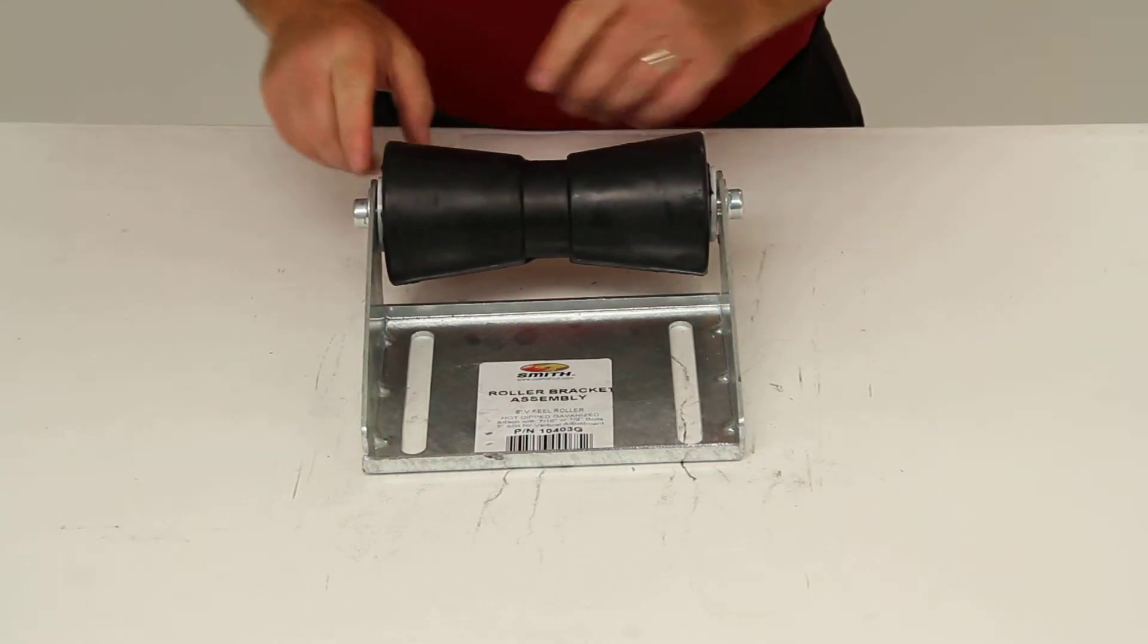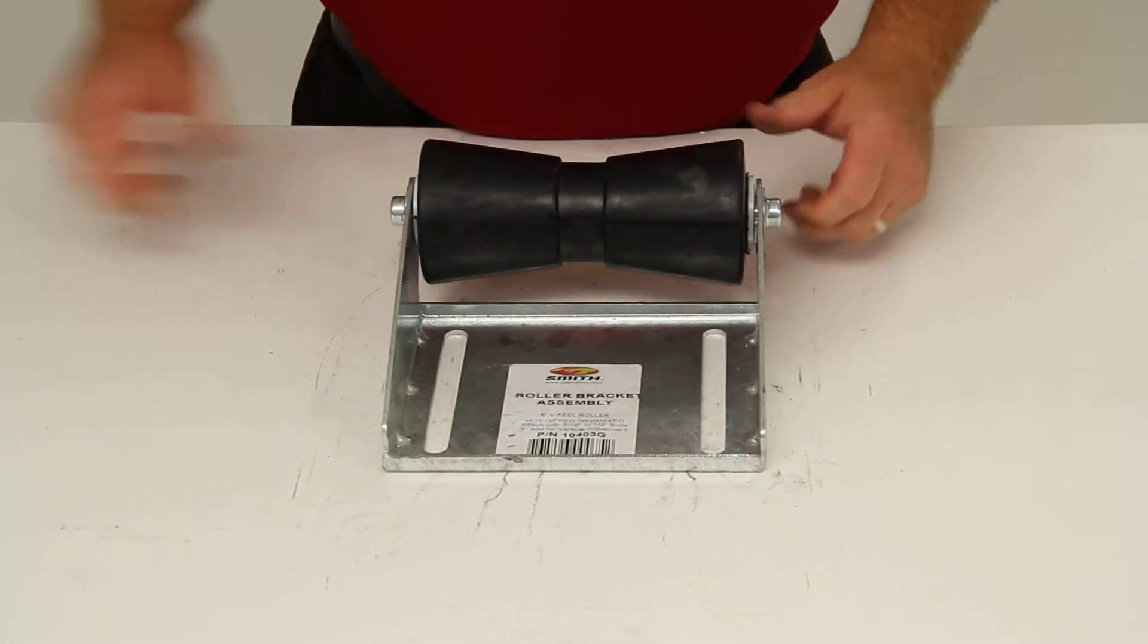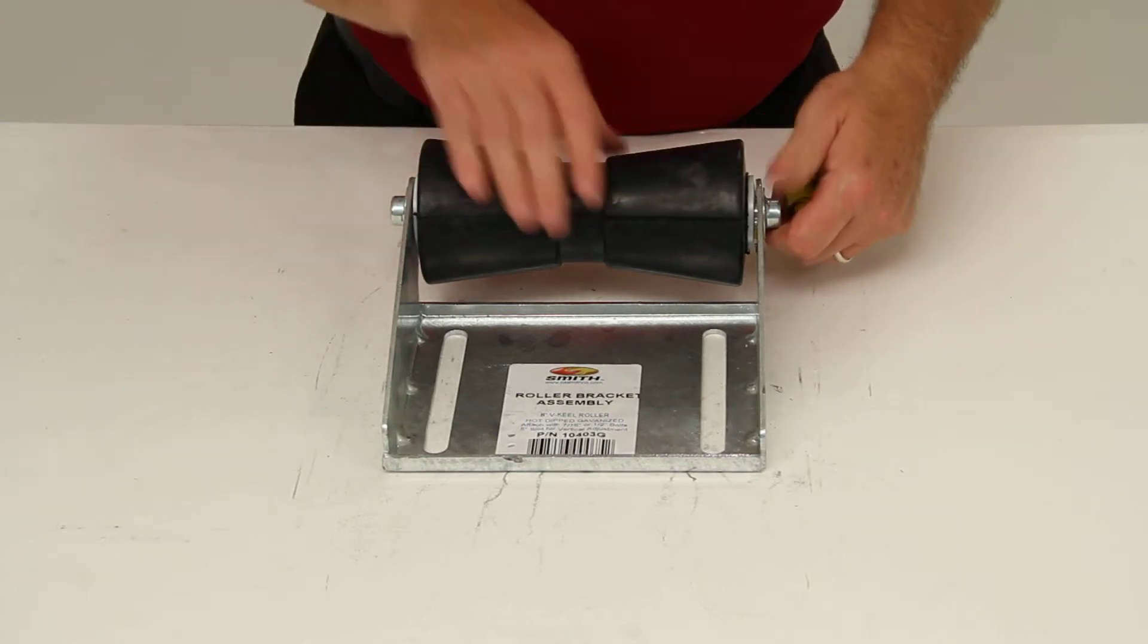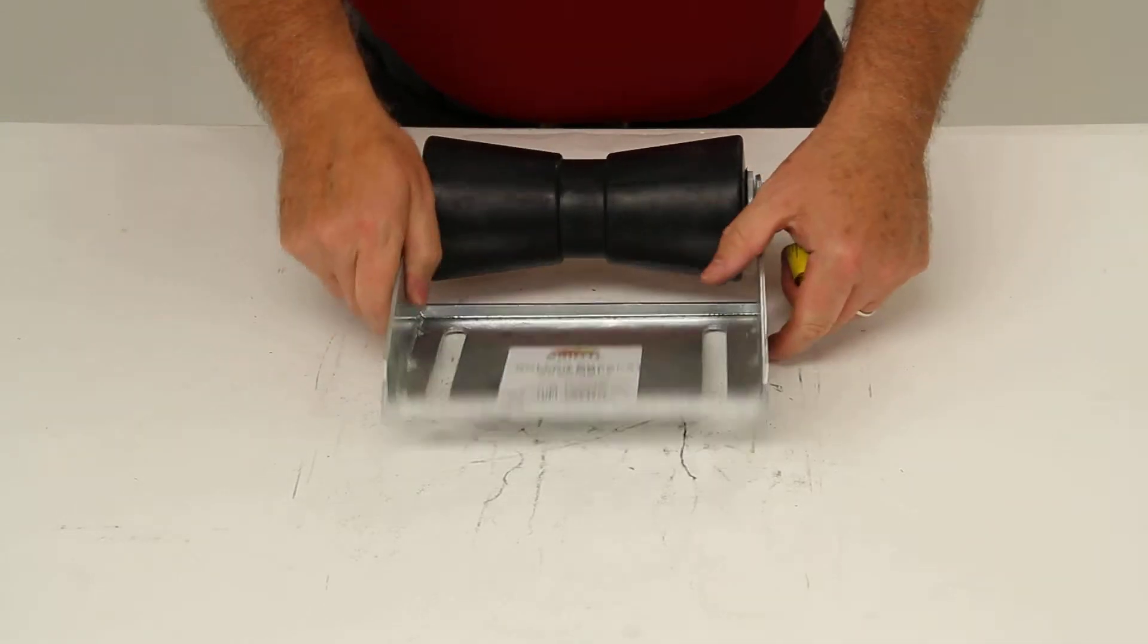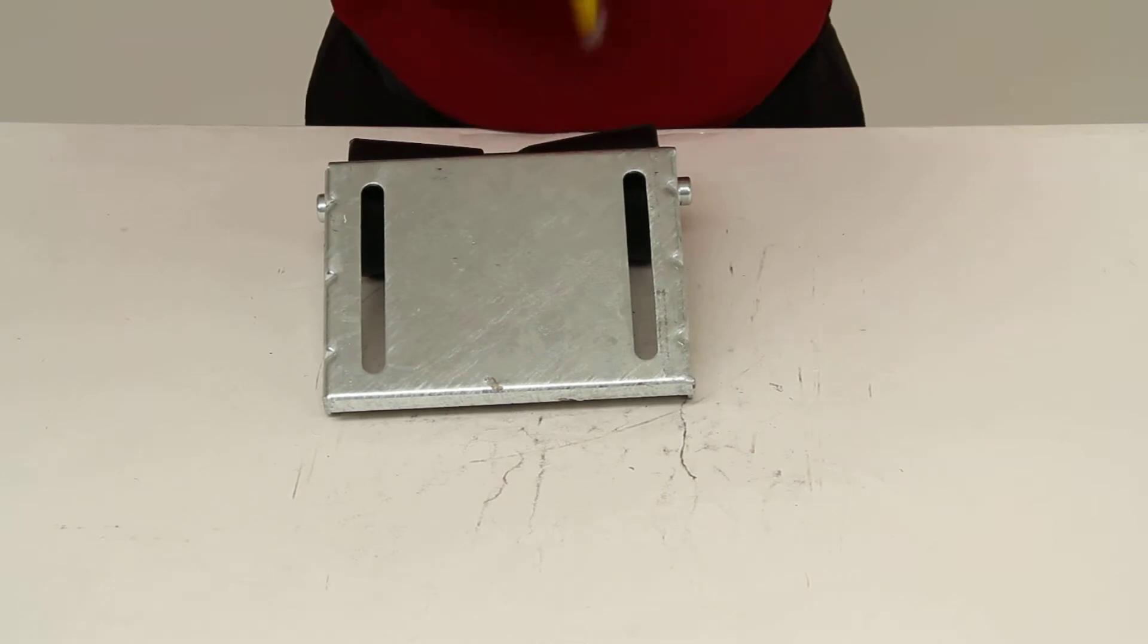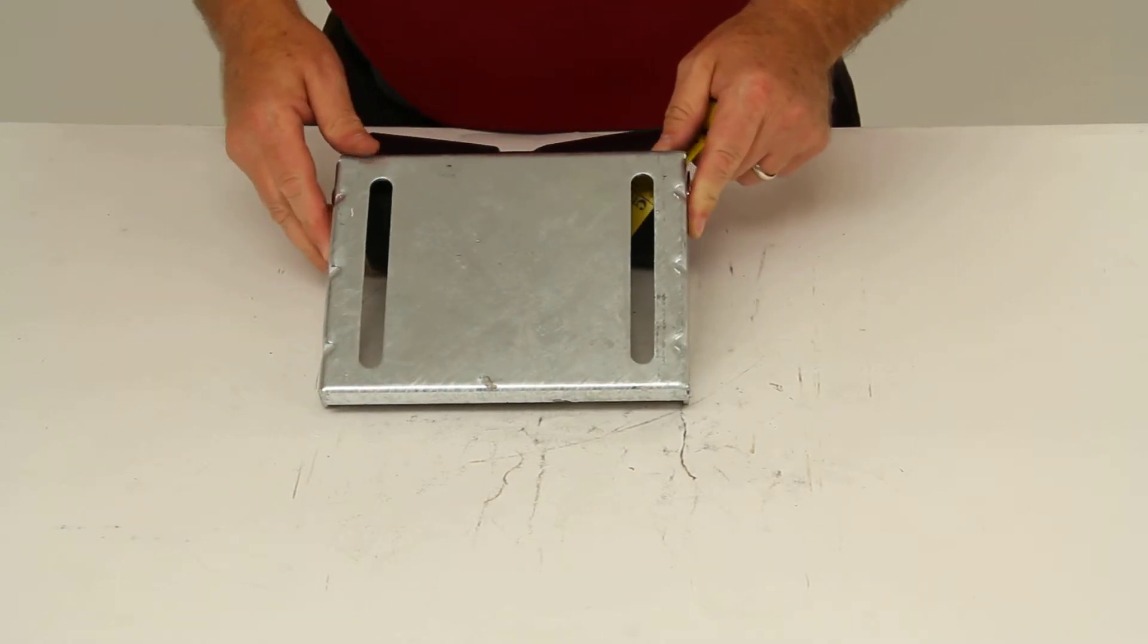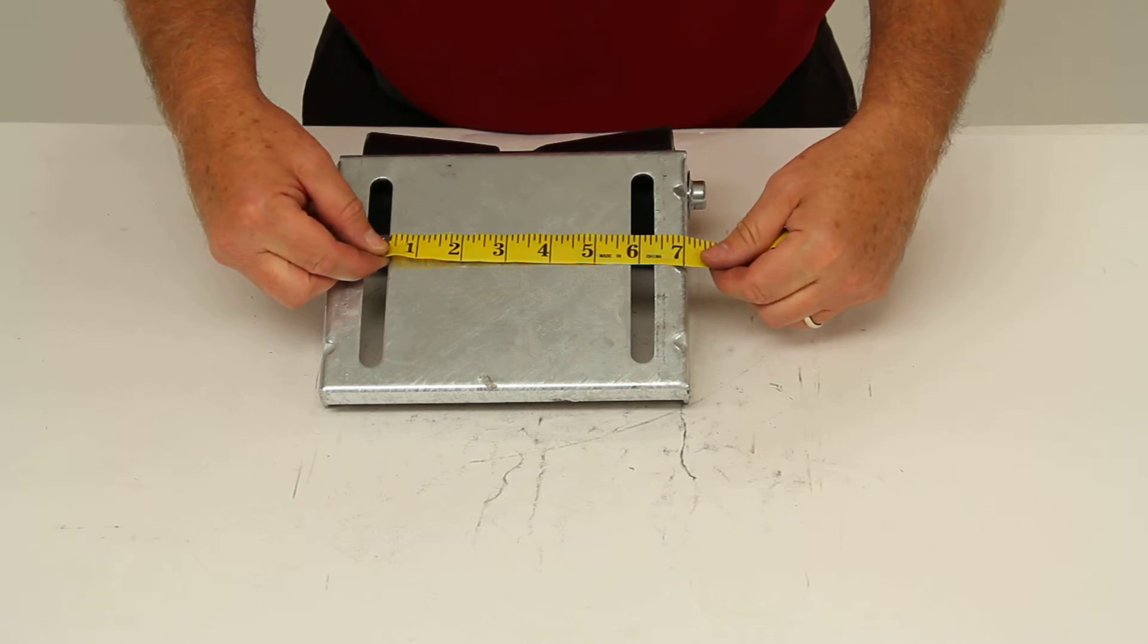The black rubber roller will deliver long-lasting performance. I'll give you a few dimensions on this. The roller length is going to be 8 inches. This roller does ride on a shaft diameter of 5/8 of an inch. The dimensions of the mounting slots are half-inch wide by 5 inches long. And then the distance between the center of both mounting slots is 6 inches.